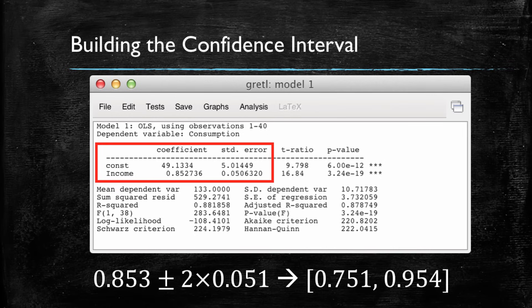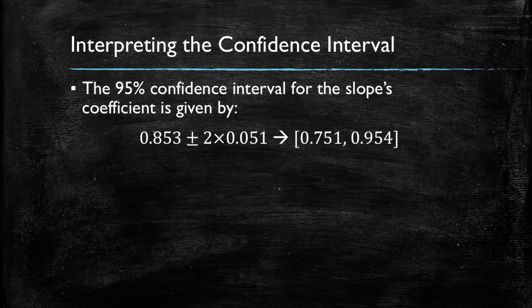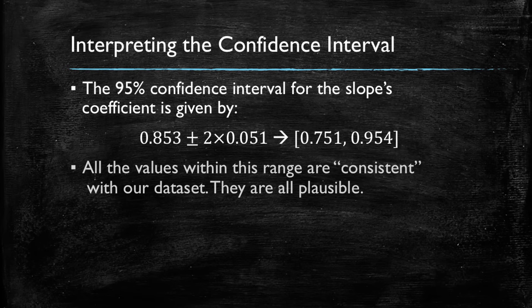So we're simply taking the point estimate of the coefficient and adding and subtracting two times the standard error. With this we have constructed the 95% confidence interval for the slope's coefficient — the range from 0.751 to 0.954. All values within this range are consistent with our dataset. If we kept running the Excel example, we would find that in 95% of cases the values we find lie within this 95% confidence interval.